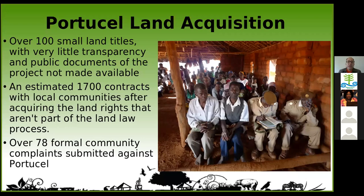One approach PortCell used was making more than 100 small land claims, because the EIA requirements and standards are smaller for small parcels than for larger ones. A lot of public documents aren't made publicly available — we have had to go to court numerous times to get information, especially environmental monitoring reports and even details about the strains being used in the monocultures. After the land acquisition, they went on to produce over 1,700 contracts with local communities.